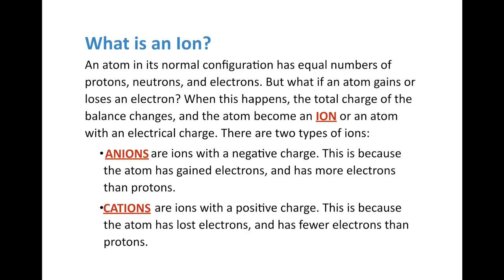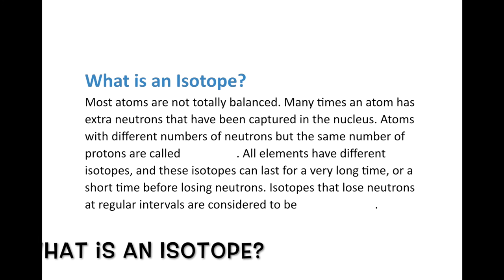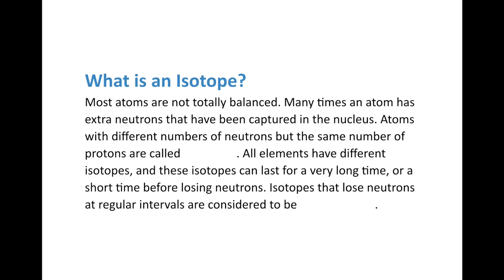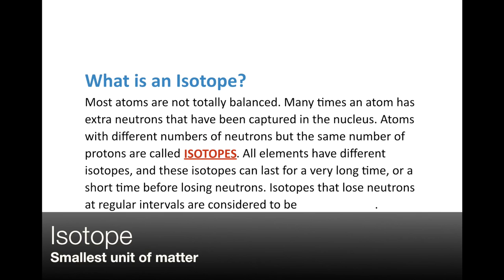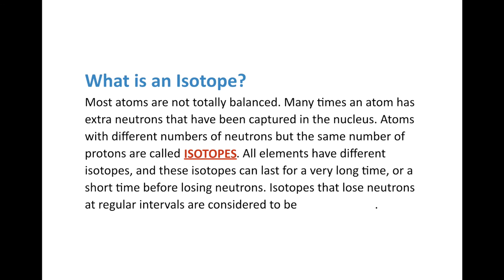There's one other special type of atom: an isotope. Many times an atom has extra neutrons that have been captured in the nucleus by the strong nuclear force. Atoms with different numbers of neutrons but the same number of protons are called isotopes. All elements have different isotopes and most atoms exist in one form of isotope or another. Some isotopes lose neutrons at regular intervals — we call those radioactive isotopes. We'll mention this more when we discuss the periodic table.